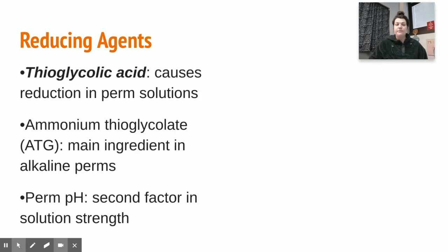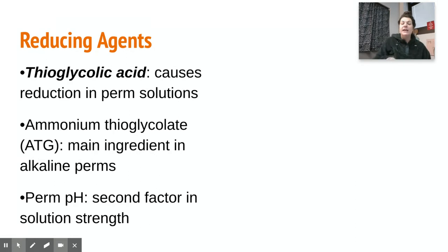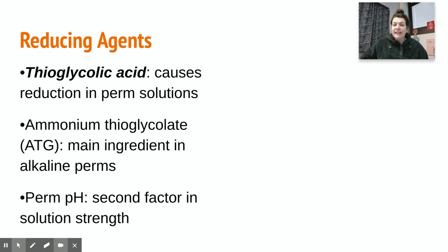What is a reducing agent? The reducing agents we use are thioglycolic acid, which causes reduction in perm solutions. Ammonium thioglycolate, also referred to as ATG, is the main ingredient in an alkaline perm — ammonium being the base piece of this solution. Perm pH is a second factor in solution strength, further strengthening the basicity or alkalinity of the solution.